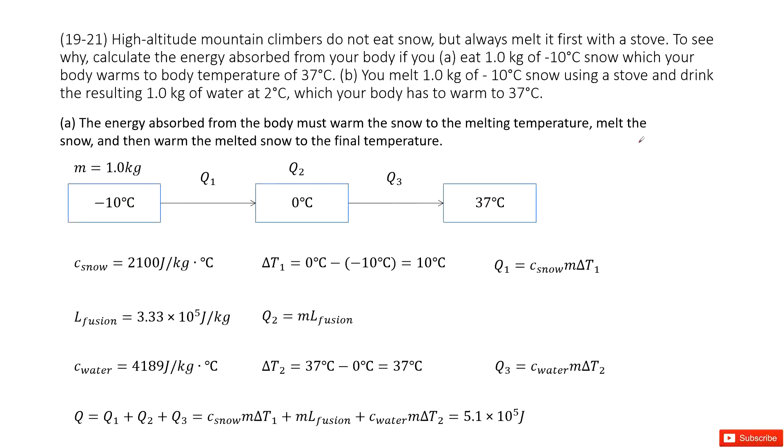For the first case, if you just eat the snow, the snow's mass is 1.0 kg, the snow's temperature is negative 10 degrees Celsius and your body's temperature is 37 degrees Celsius. How much energy do you need to spend to make this snow from negative 10 degrees to 37 degrees?